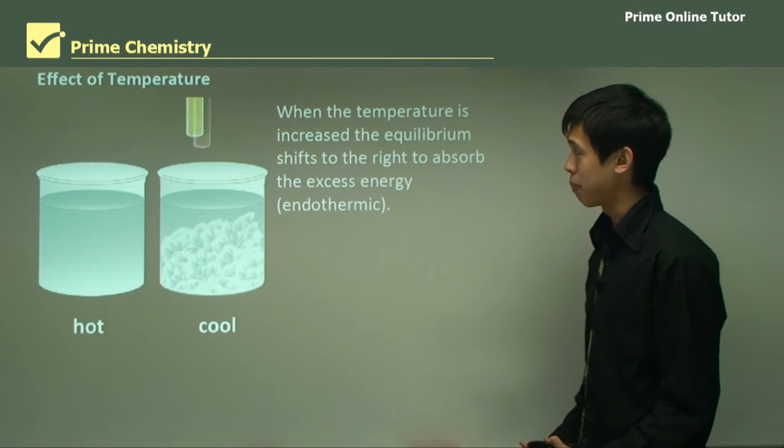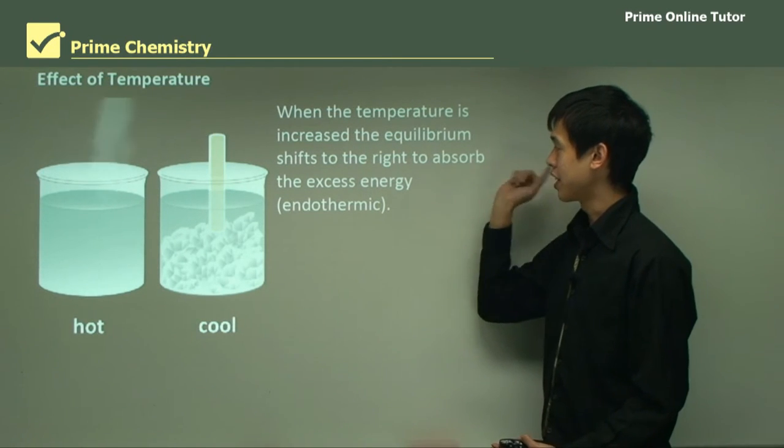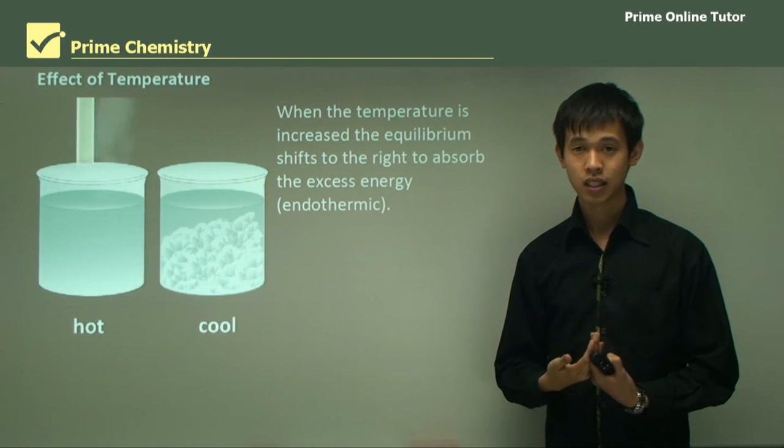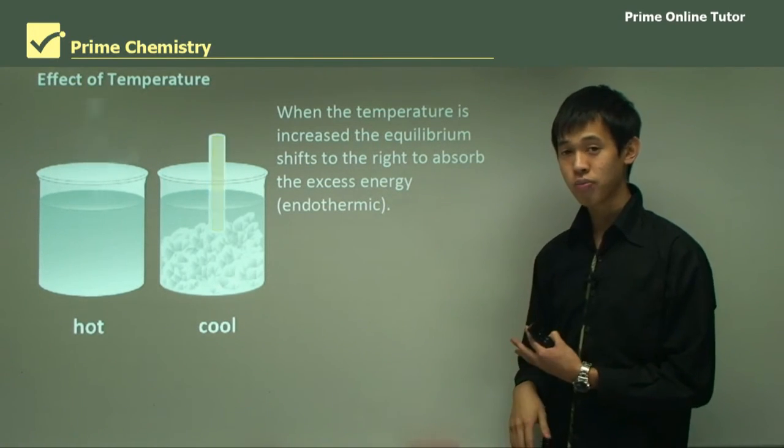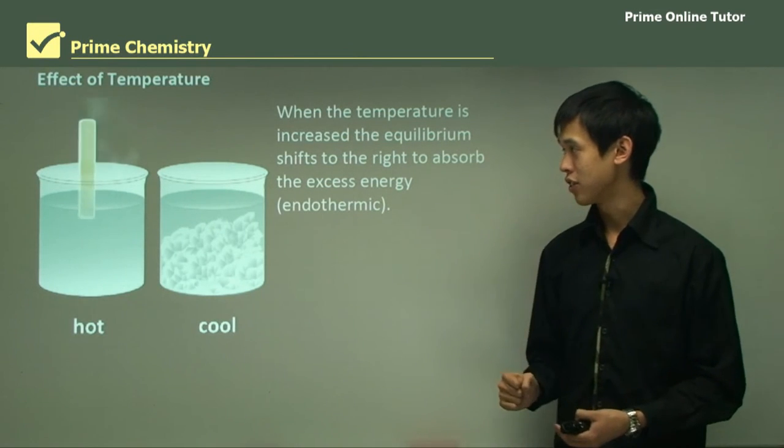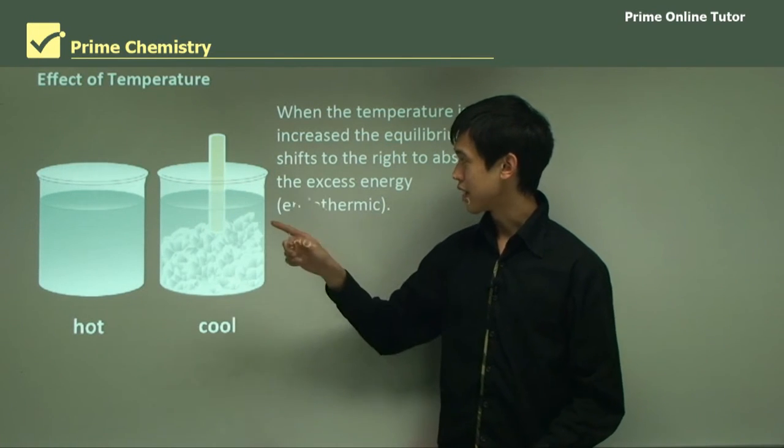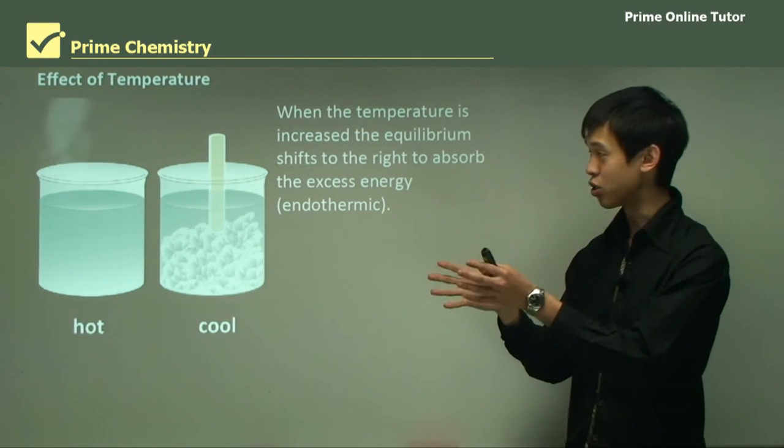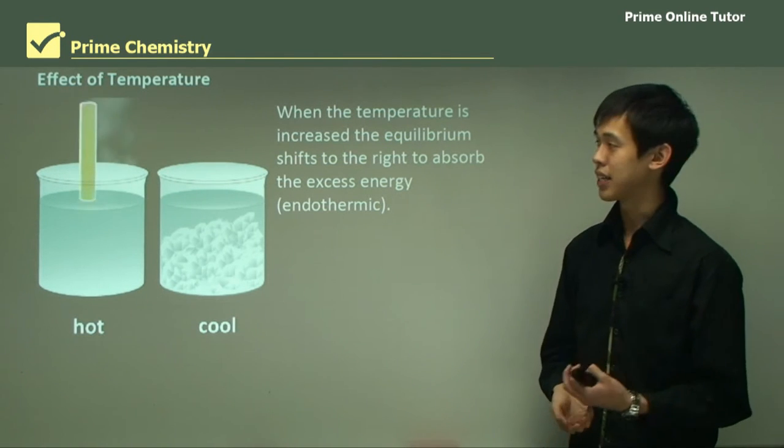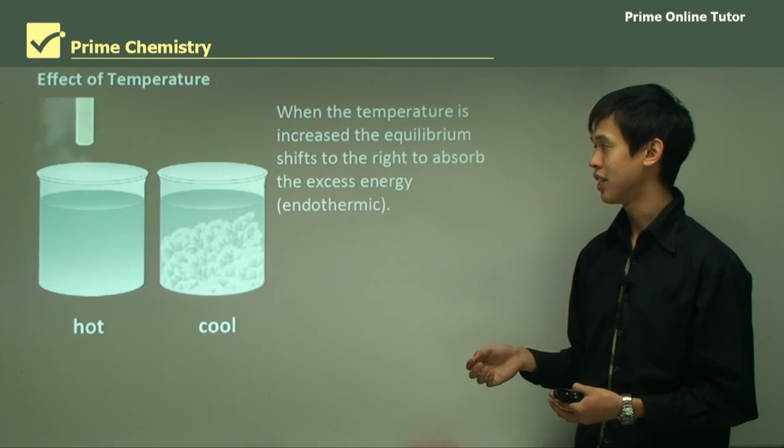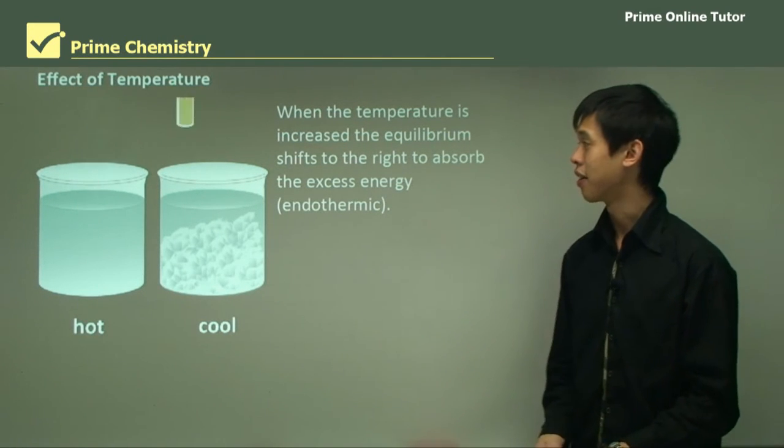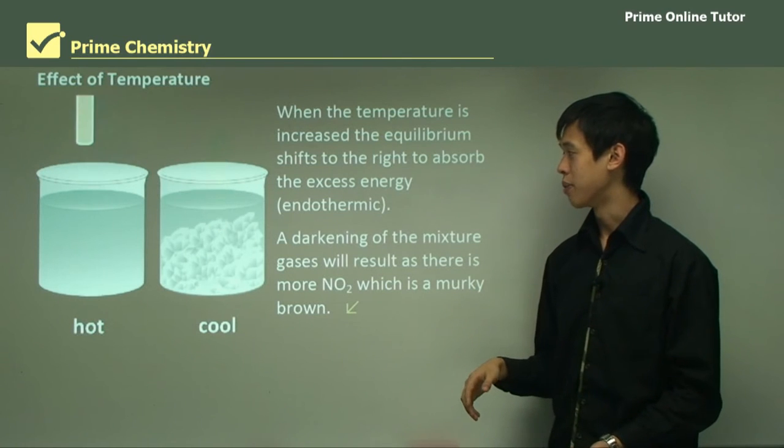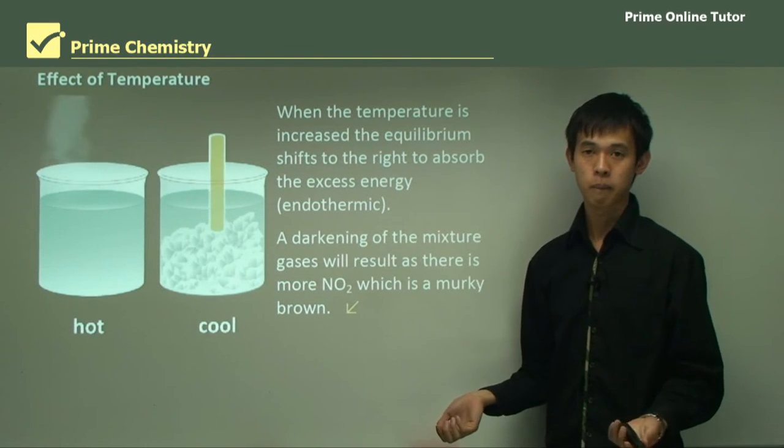So now we can look at the temperature, the effect of temperature. When the temperature is increased, the equilibrium shifts to the right to absorb the excess energy. Remembering that it's an endothermic reaction. So going from N2O4 to 2NO2 is endothermic, so it absorbs energy. So when we dunk this in the hot water, it gets darker, because we're going towards that NO2. And when we cool it, it goes the other way. It goes back to clear, because it's trying to get rid of that energy, or try to replace that energy, and thus becomes dinitrogen tetraoxide. So a darkening of the mixture gas will result as there is more NO2, which is murky brown, when we increase the temperature. If we go the other way, it gets clearer.